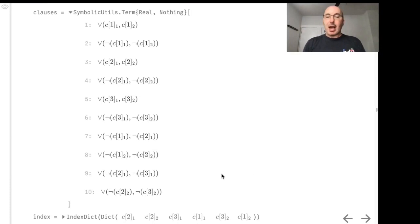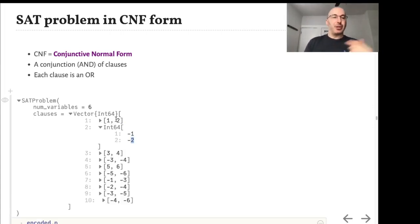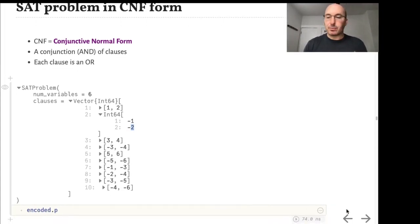We can encode all of the constraints this way as a long sequence of boolean statements. The amazing thing is there are actually solvers to solve these problems. This is called a SAT problem in standard CNF form. It stands for conjunctive normal form which is a conjunction or AND of clauses and each clause is an OR. Here it is written out numerically. We've converted from the symbolic representation to the numerical representation.